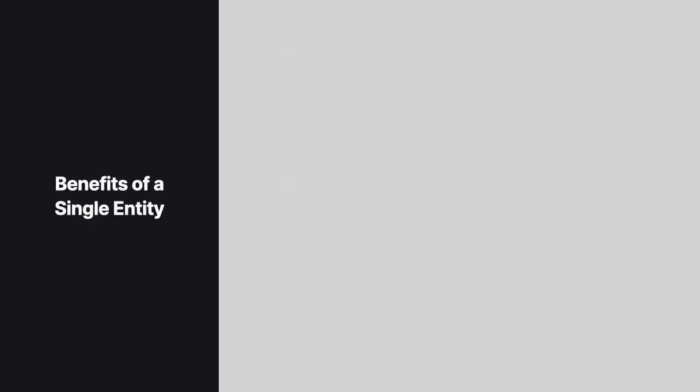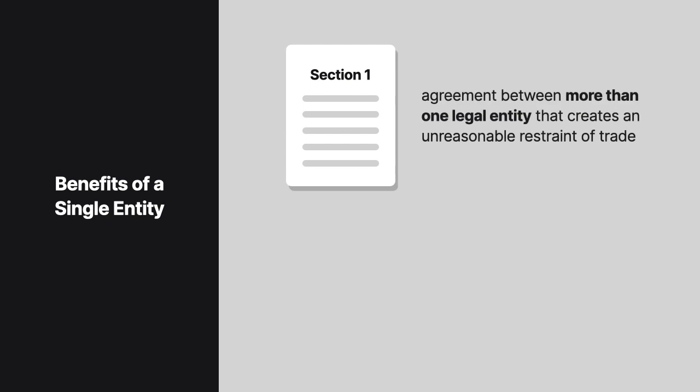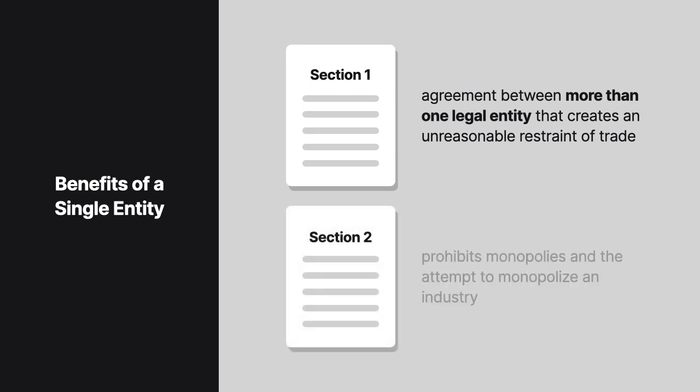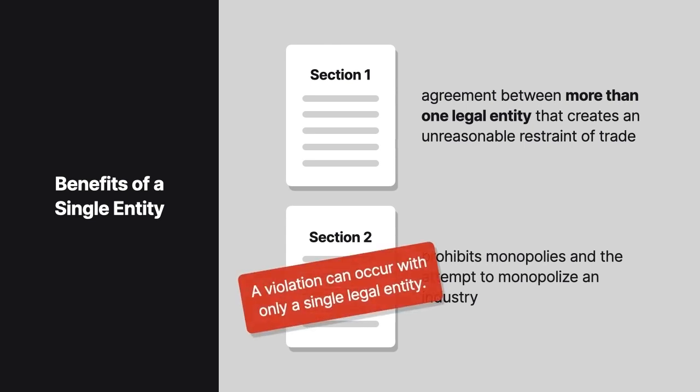Under Section 1 of the Sherman Act, an antitrust violation occurs when there is a contract or other agreement between more than one legal entity that creates an unreasonable restraint of trade. In contrast, under Section 2 of the Act, a violation can occur with only a single legal entity, because Section 2 prohibits monopolies and the attempt to monopolize an industry.